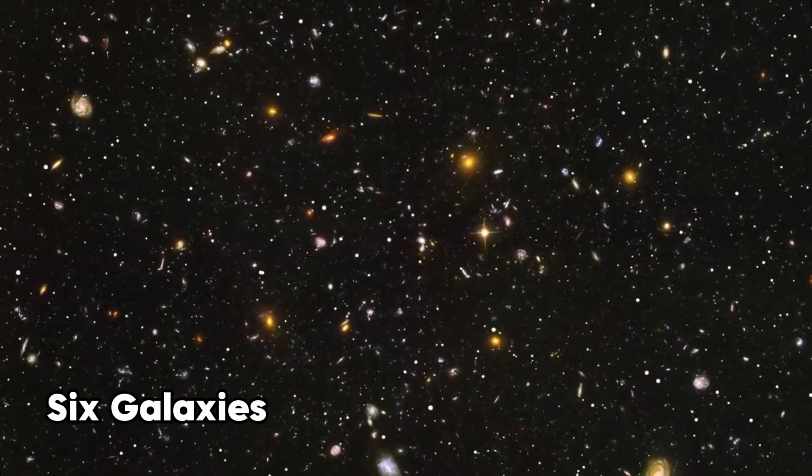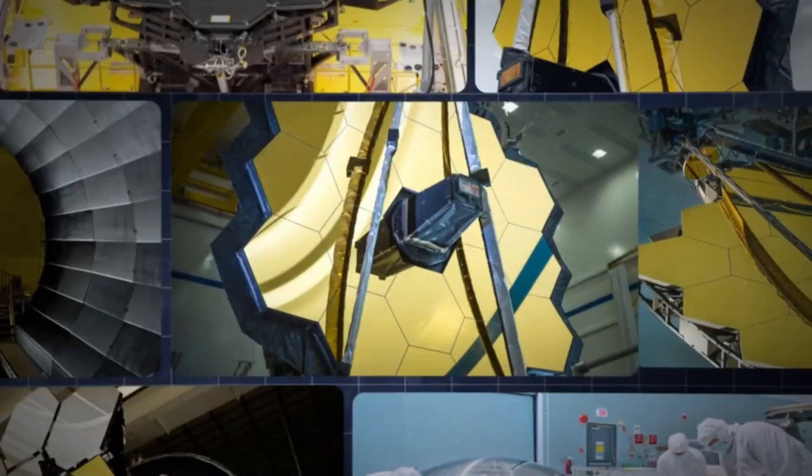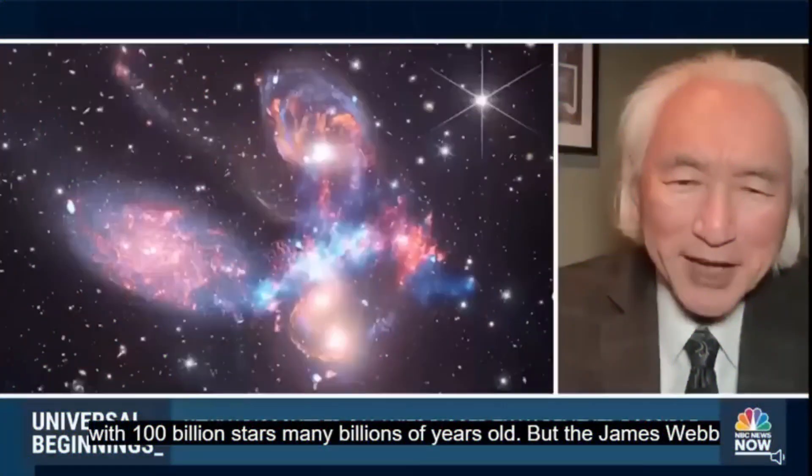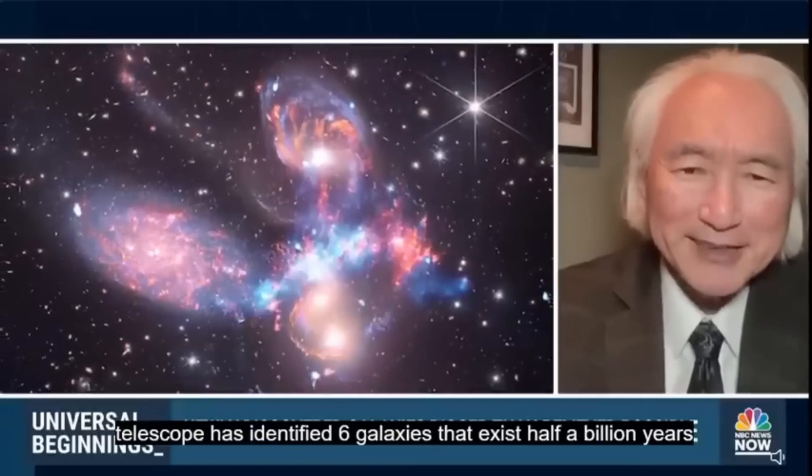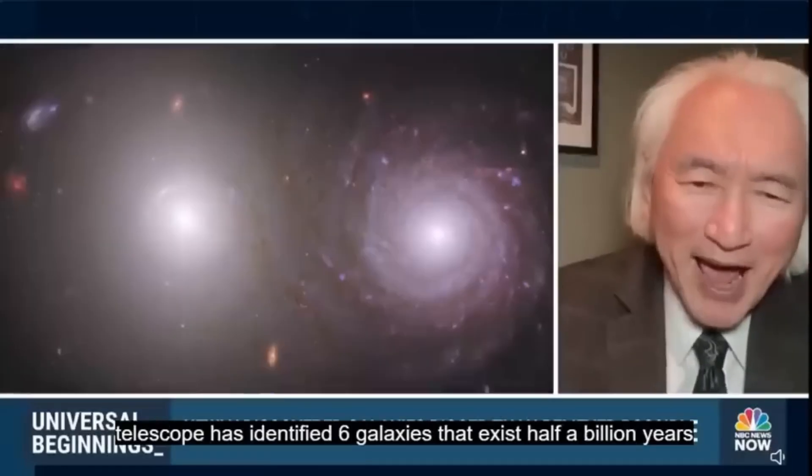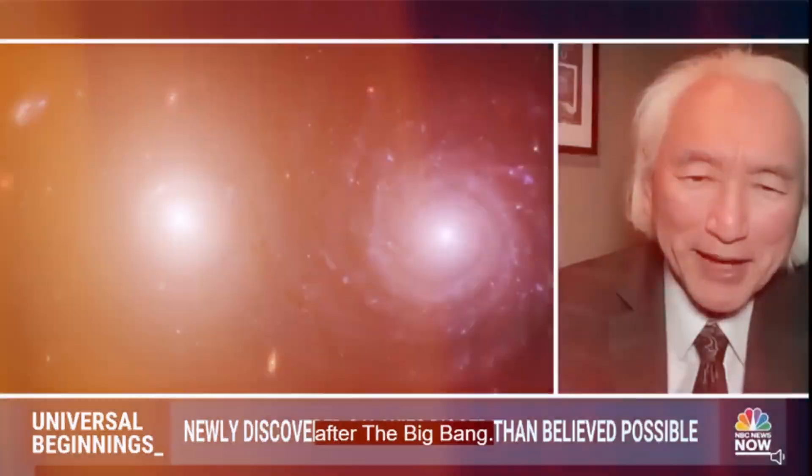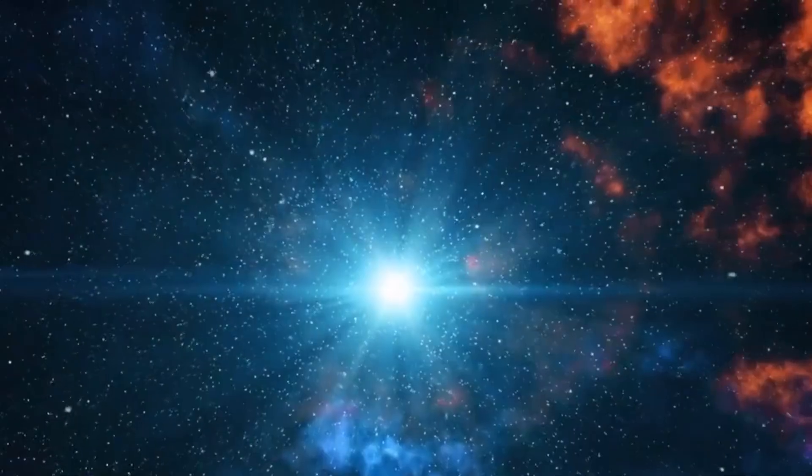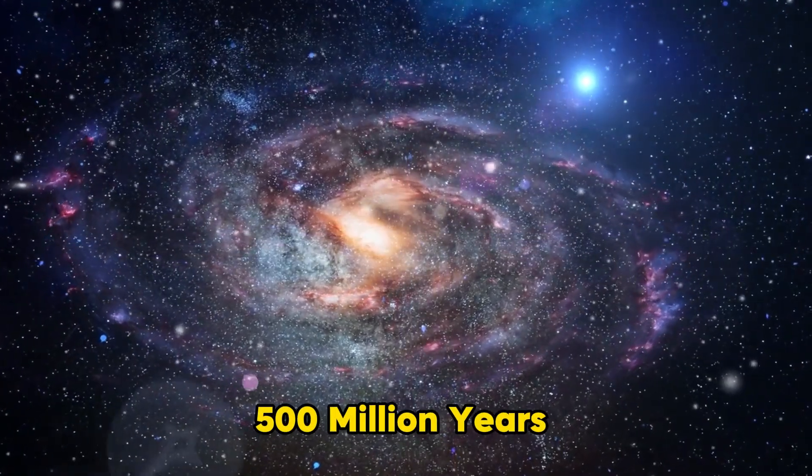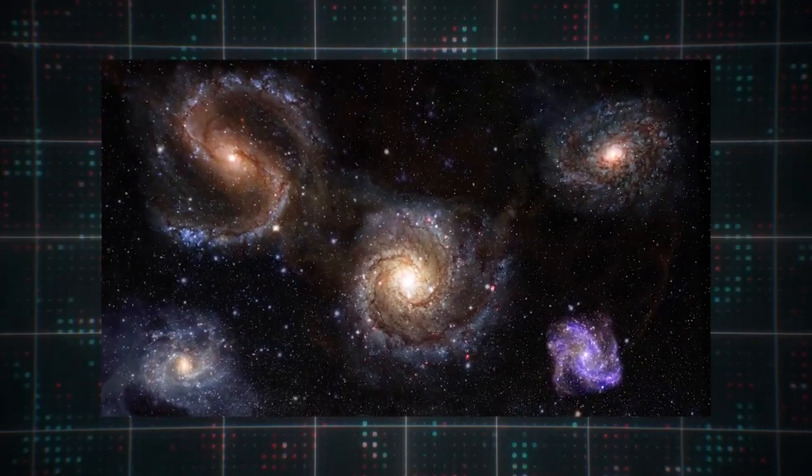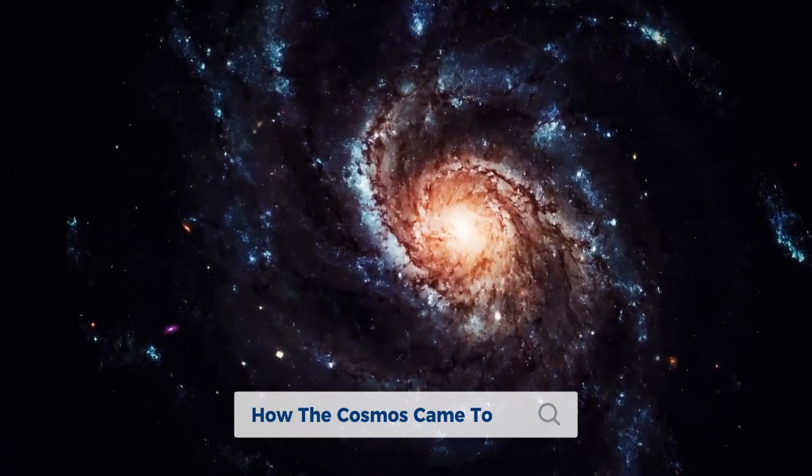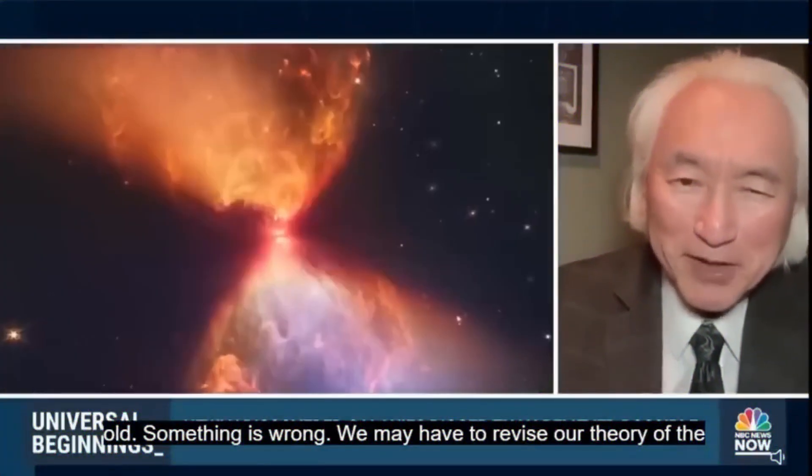However, six galaxies as large as the Milky Way, discovered by the James Webb Telescope, existed within 500 million years of the Big Bang. These are as large as the Milky Way itself. That is not acceptable. Primordial galaxies younger than 500 million years shouldn't exist if they are larger than our own Milky Way. We have a problem. We might need to rethink how the cosmos came to be.